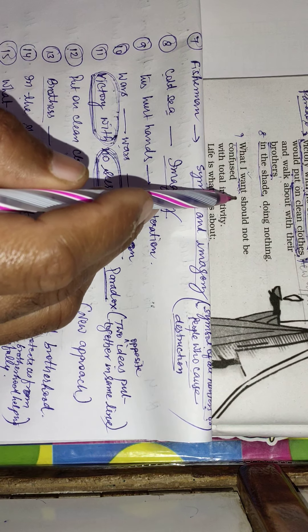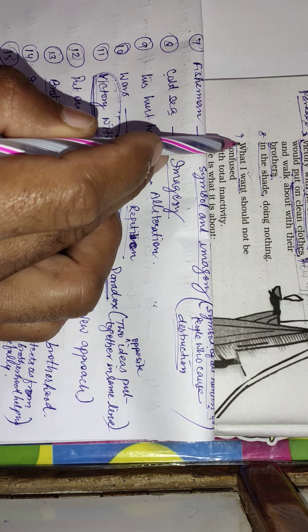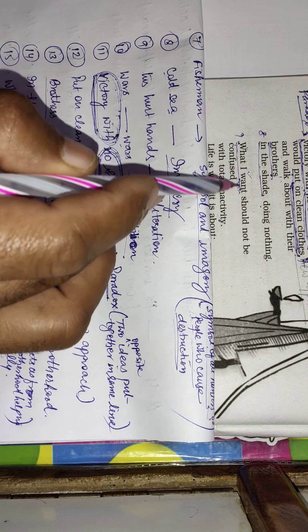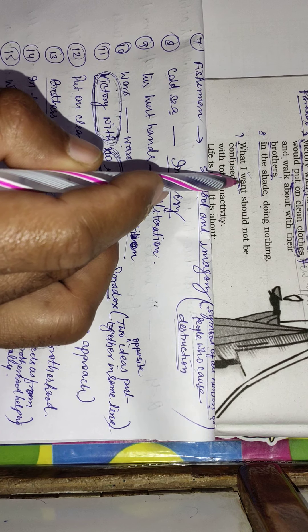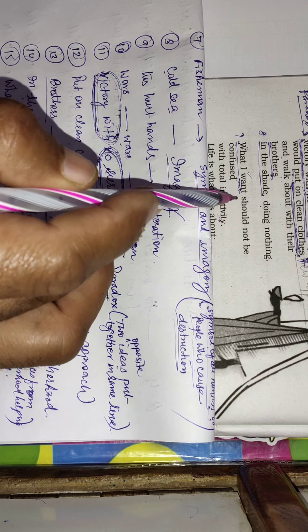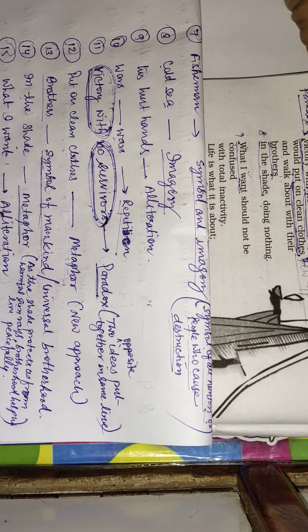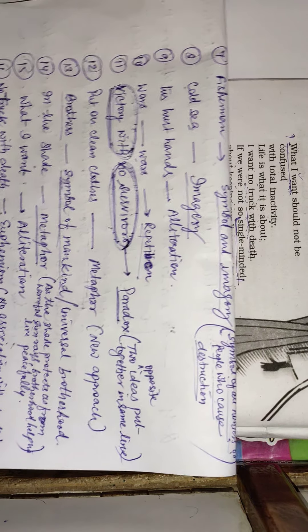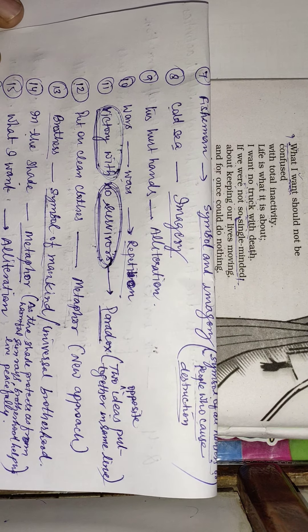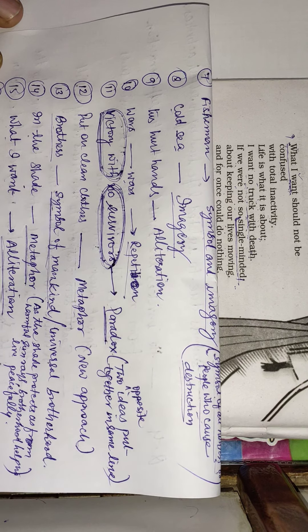'What I want should not be confused, what I want' — here the consonant sound of W has been repeated in 'what' and 'want,' so it is again an alliteration figure of speech. We are giving our stress mainly on the figures of speech employed in this poem.